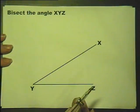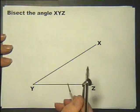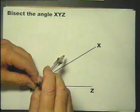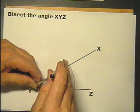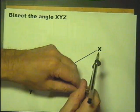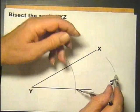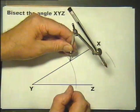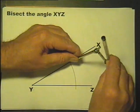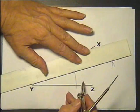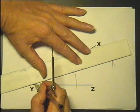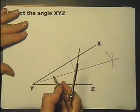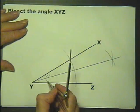Do that one again just to rub it in. Bisect the angle XYZ. Open the compasses to any radius whatsoever, compass point in the vertex of the angle. Leave the radius as it is, go in there, can you see that? Then put it in there and draw another arc. Where the arcs cross, that line is the bisector of that angle. It cuts the angle in half and that bit will be the same angle as that bit there.